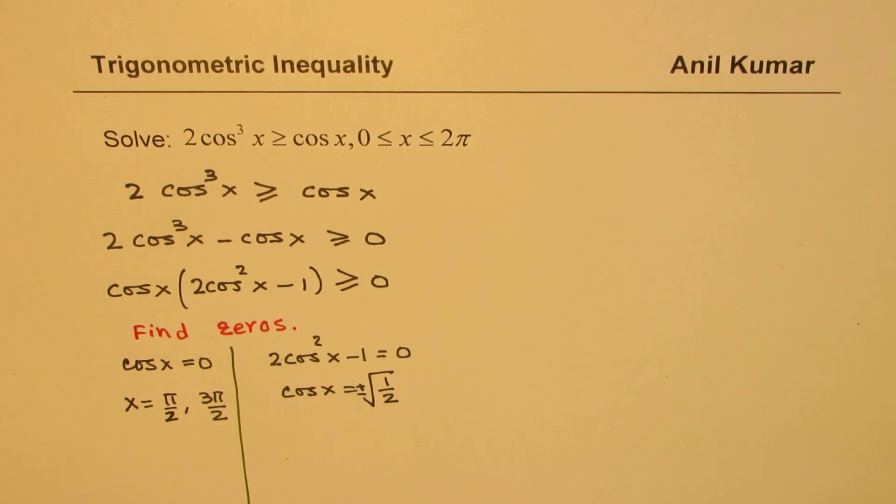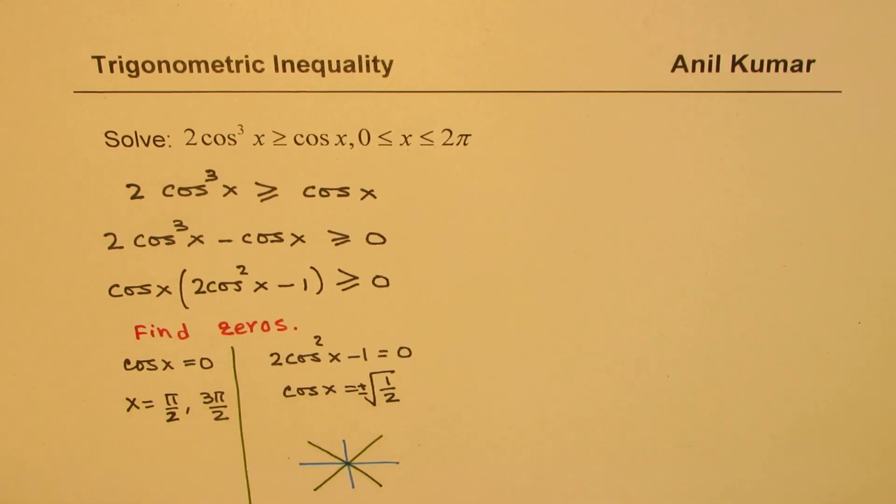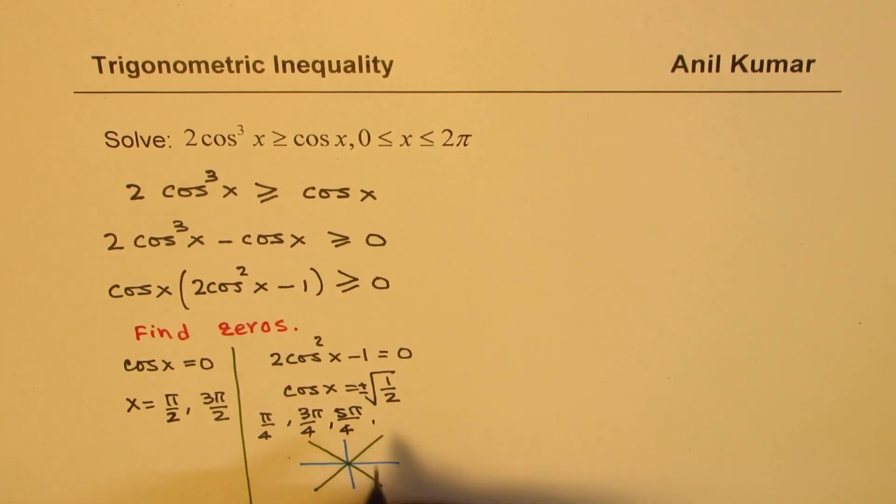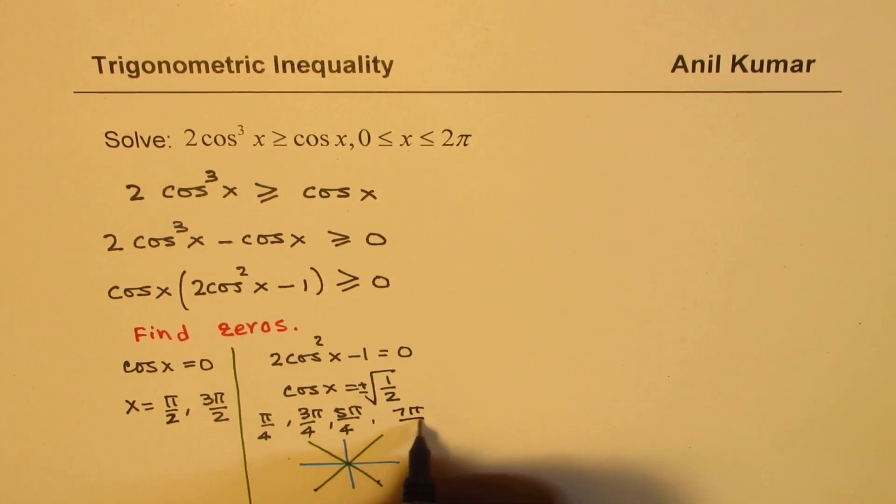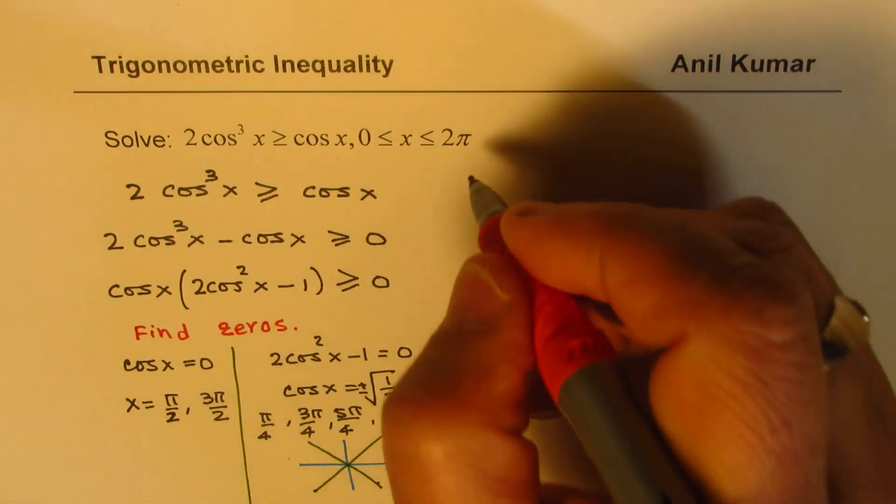1/√2 means π/4 and these 4 values. So we are looking for π/4, then 3π/4, 5π/4 and 7π/4. So we have actually 6 zeros for this particular graph.